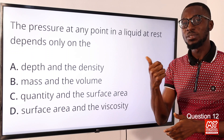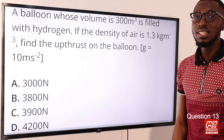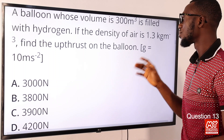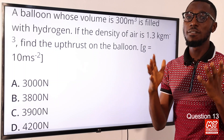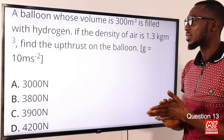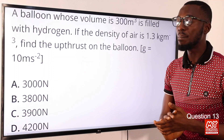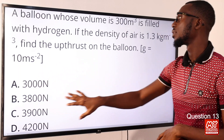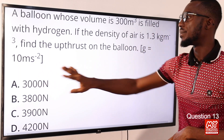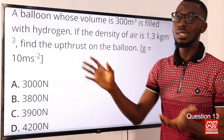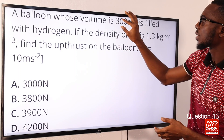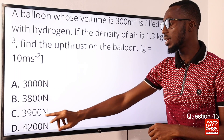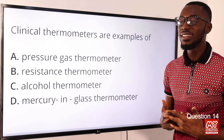Question thirteen: a balloon whose volume is 300 m³ is filled with hydrogen gas. If the density of air is 1.3 kg/m³, find the uptrust on the balloon. Using Archimedes' principle: uptrust = volume × density × g = 300 × 1.3 × 10 = 3900 N. We find that in option C, so option C is the correct option.